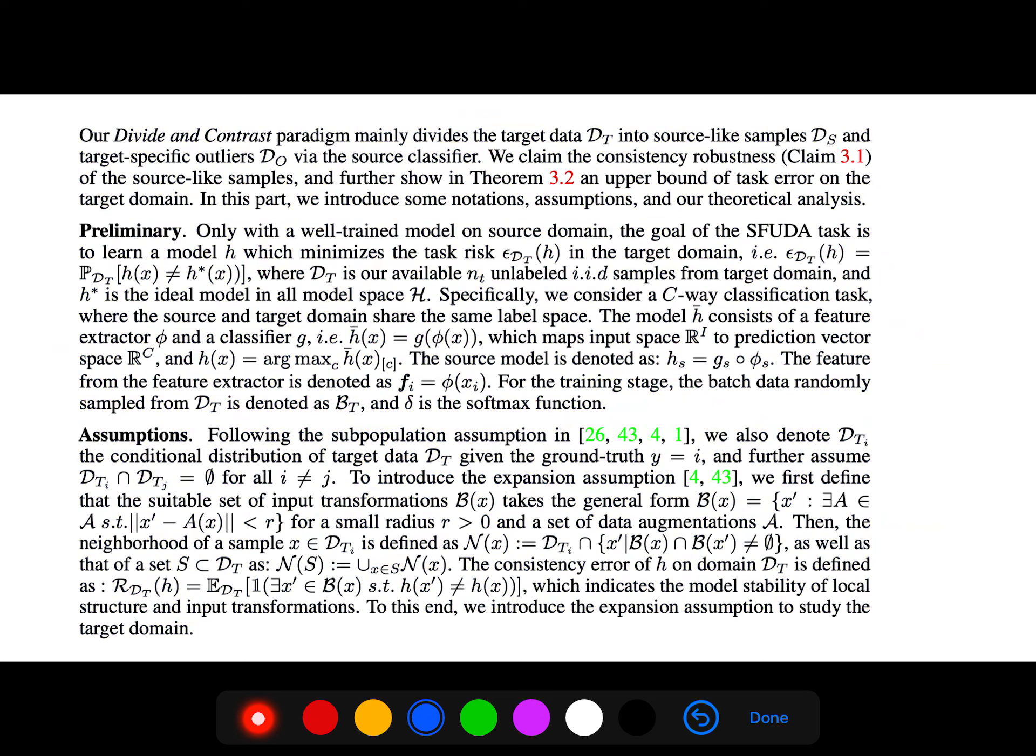To introduce the expansion assumption, we first define the suitable set of input transformations. B(x) equals x' such that there exists some A where the distance between x' and A_x is less than radius r.